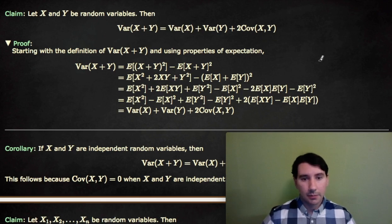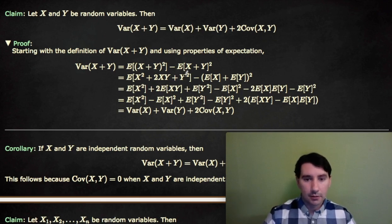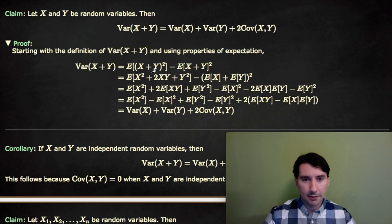You can prove this by just using the formula for variance and covariance. The variance of X plus Y is equal to the expected value of X plus Y squared minus the quantity expected value of X plus Y, squared.